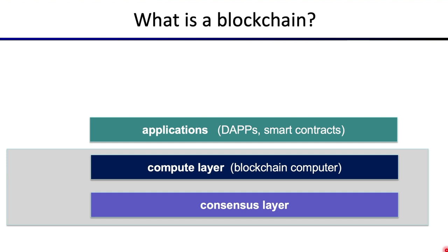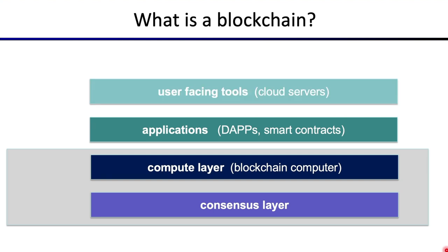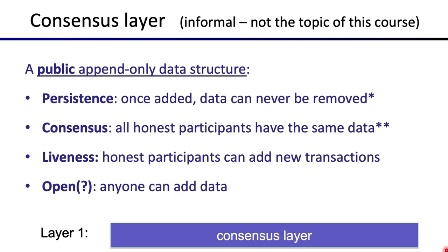The third layer is basically the applications themselves — now that we have a computer on which we can run applications. These are sometimes called decentralized applications, dApps, or sometimes smart contracts. These are the applications that we run on the blockchain. And finally, the fourth layer consists of user-facing tools, which is basically how the public actually interacts with these programs.